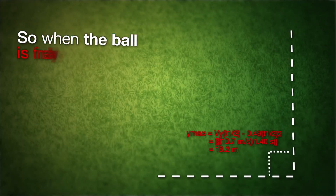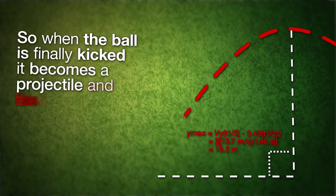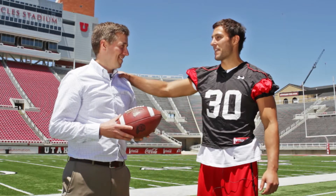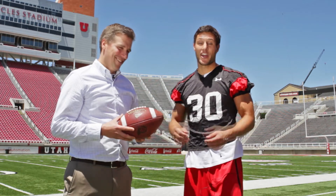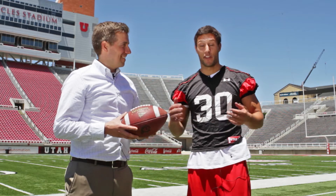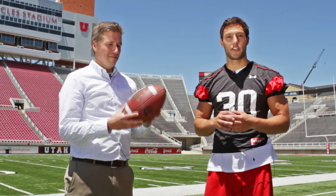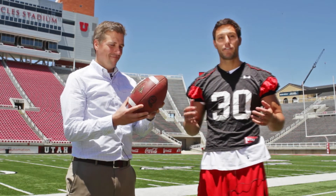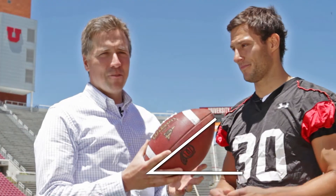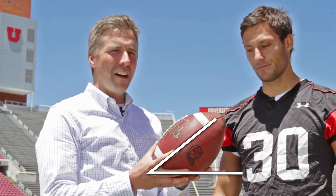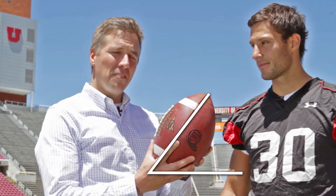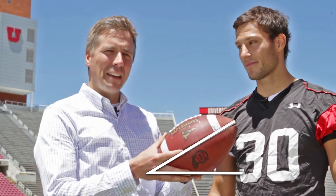So when the ball is finally kicked, it becomes a projectile and follows the rules of projectile motion. So Mr. Mathematician, this will make you happy. The angle that the ball leaves my foot actually matters a lot. The angle for the longest kick is supposed to be about 45 degrees. But for different situations in the game, we can vary that angle a lot. When Sean wants to pin the opponent close to the goal line, he might drop it in with a higher angle. In other situations, he might want to kick it flatter.